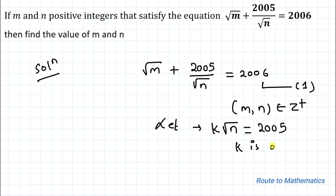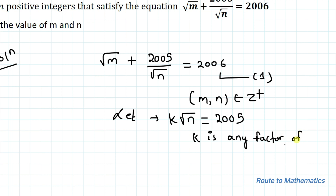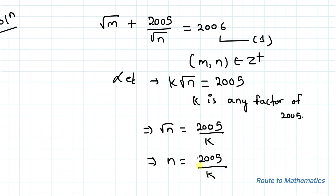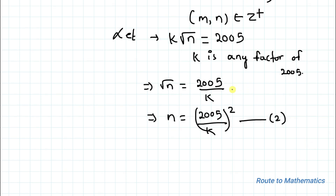From here we can write √n = 2005 / k. Squaring both sides gives us n = (2005 / k)², which we'll call equation 2. Similarly, we can write k = 2005 / √n.